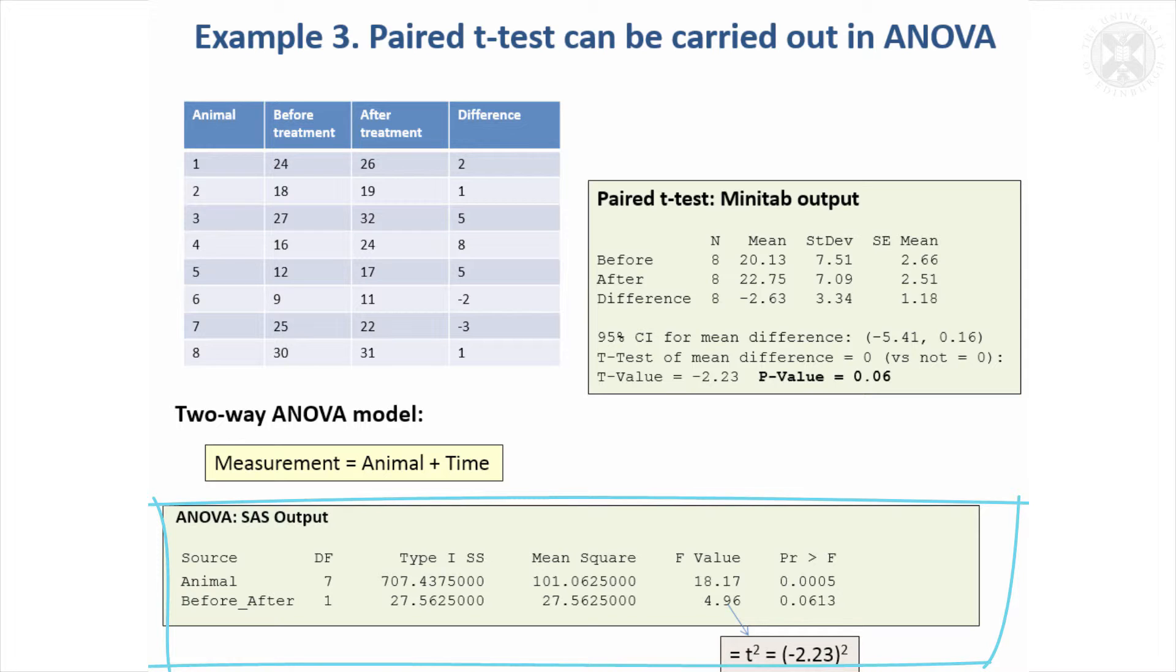It results from what's called an F-test rather than a t-test, but in this case the two tests are equivalent. This F-value is going to be the square of the t-value. It's the square of 2.23, which is 4.96, and it will give the same p-value.